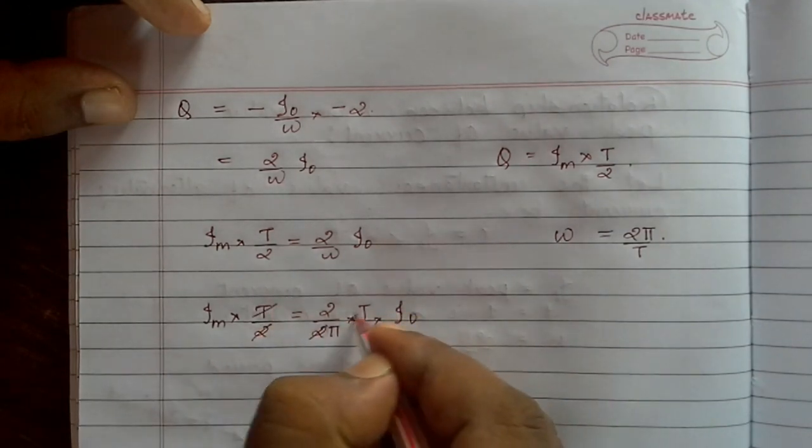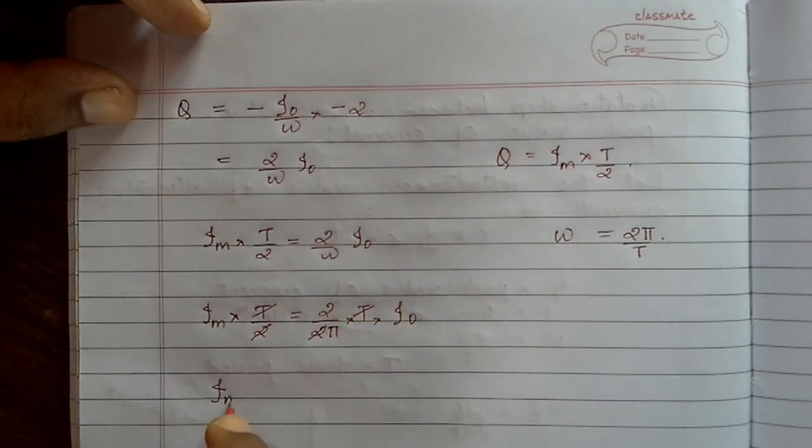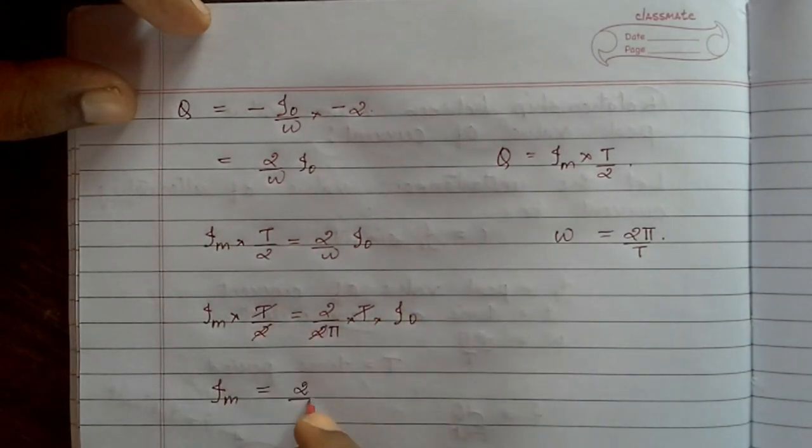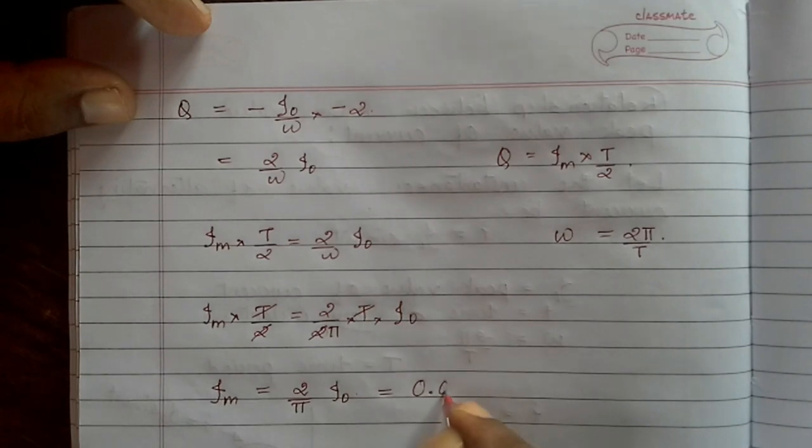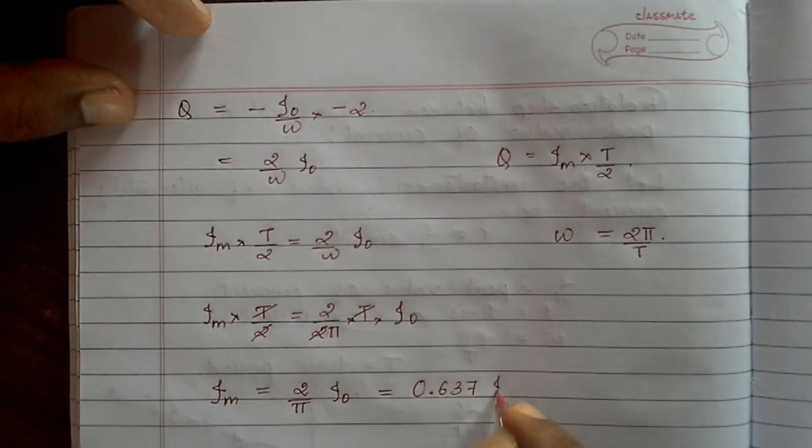2, 2 cancelled, T, T cancelled. So Im equals 2 by pi times i0, or that is equal to 0.637 times i0.